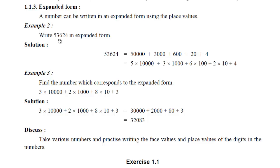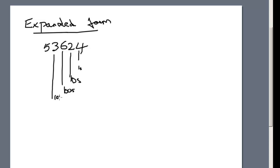Let's see the example, there's 53,624. Expanded form, 53,624. We're going to make this in expanded form. We know what is this - this is ones, tens, hundreds, thousands, ten thousands.